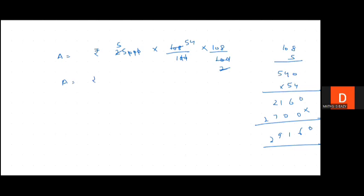So amount will be coming out to be Rs. 29,160. Compound interest will be 29,160 minus 25,000. So compound interest would be Rs. 4,160. This is our answer. So it was all about part 3rd and 4th of question number 1st.